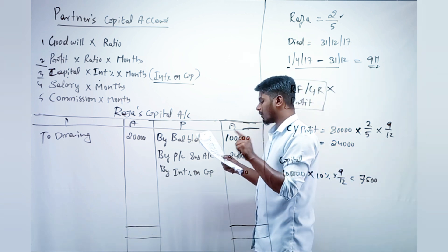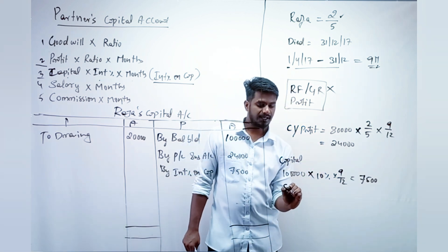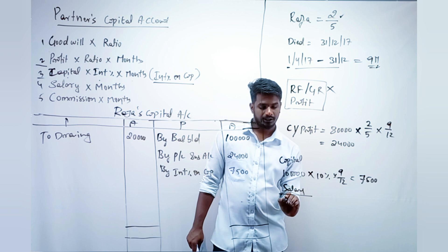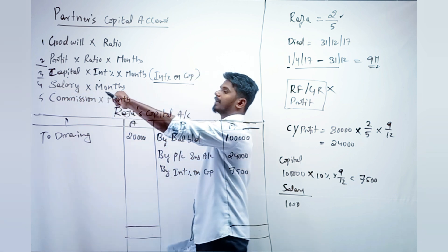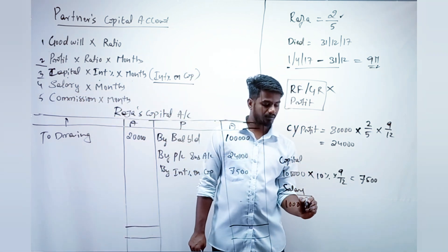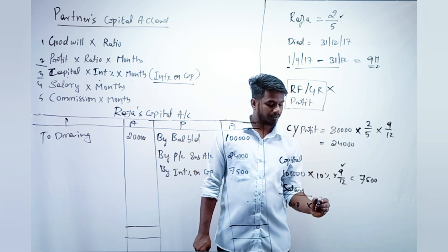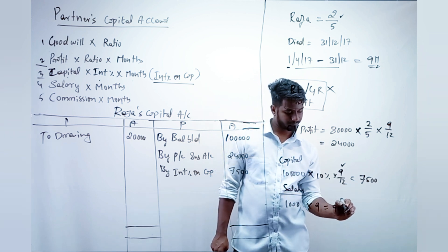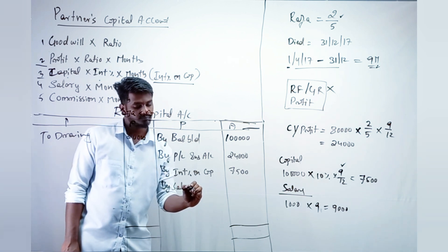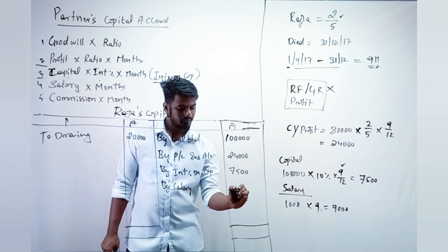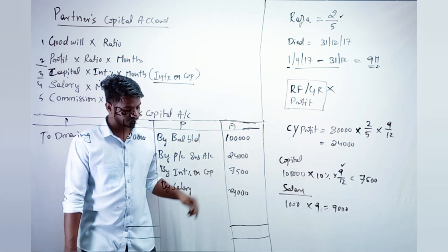Point E: Raja's salary is 1,000 per month. Salary is recorded as salary × months worked. He worked for nine months, so salary is 1,000 × 9 = 9,000. We record this on the credit side as Salary: 9,000.